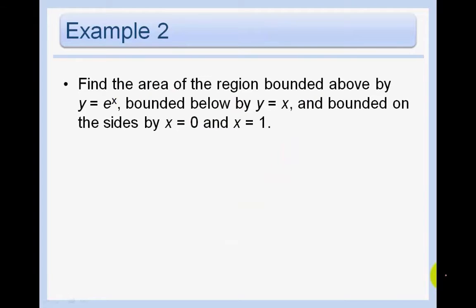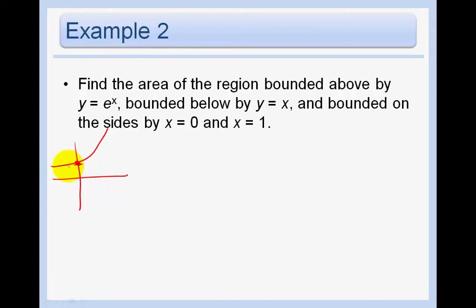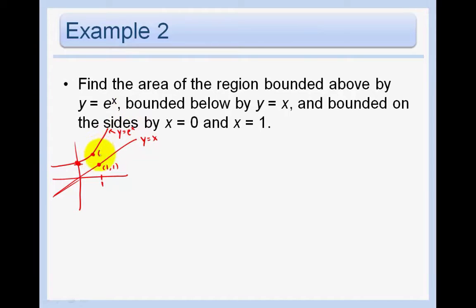Find the area of the region bounded above by y equals e to the x — that's our top curve — bounded below by y equals x — that's our bottom curve — and bounded on the sides by x equals 0 and x equals 1. So the integral goes from 0 to 1. A brief sketch: y equals e to the x goes through the point (0,1), and y equals x goes through (1,1). The point on y equals e to the x at x equals 1 is (1, e).